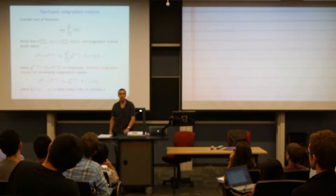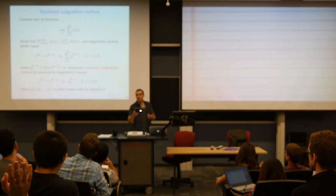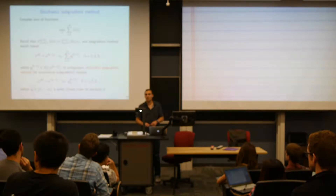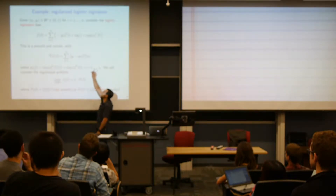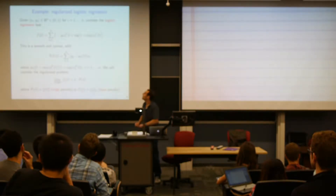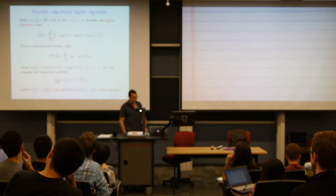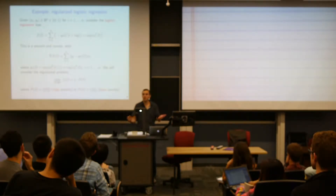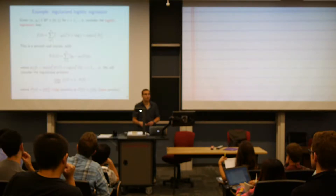When would you see this in practice? Any classification or regression method with a lot of samples — for example, logistic regression. Here n is the number of training points and the function being minimized is a sum of n terms. If n is a billion, every time you compute a gradient or subgradient you're summing a billion quantities — not very practical. The standard subgradient update sums all the subgradients gᵢ for each fᵢ.